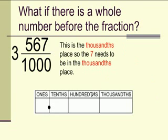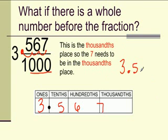Now, what if there's a whole number before the fraction? Well, the same thing as if there's a whole number before the decimal. The 3 goes on the left of the decimal point, and then, because there's three zeros here, your decimal point is pushed back three spaces. So, it ends up being 3.567.